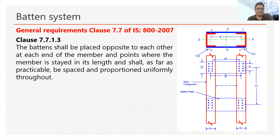The next requirement states that batons should be placed opposite to each other at each end of the member and at points where the member is stayed in its length, and shall, as far as practicable, be spaced and proportioned uniformly throughout. This means if one baton is placed on one face, the other baton will be placed on the opposite face. It should not be the case that batons are provided on one face only, or not provided uniformly. If four batons are provided on one face, then four batons will be placed on the opposite face at the same spacing throughout the length.